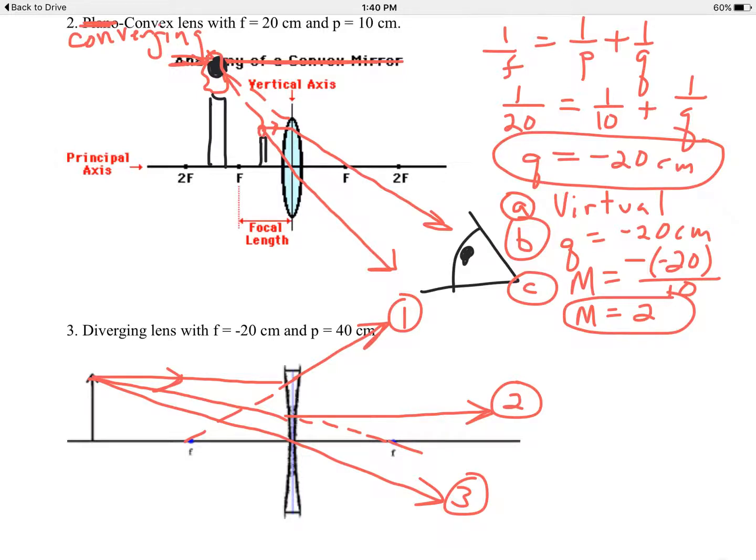But if you follow those backwards, and I will use black in this case, this one's already set. This is the backwards projection of number 1. Number 3, it's just a straight ray anyways. I don't need to project it backwards. But ray number 2, if I go backwards with that one, all 3 of those rays, 1, 2, and 3, should intersect in one spot.